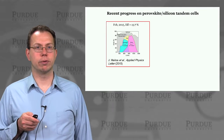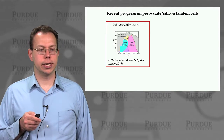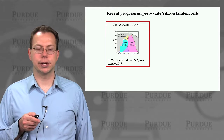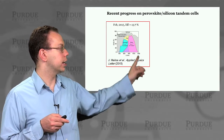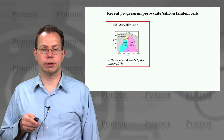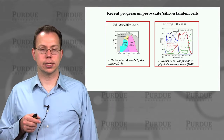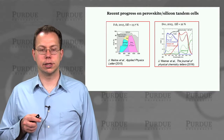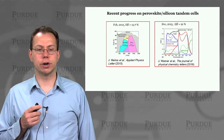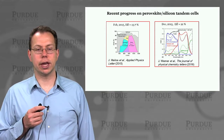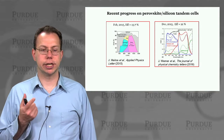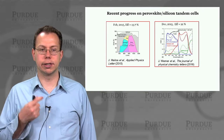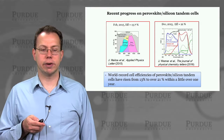There has been a lot of work just in the last year showing that you can have perovskite-silicon tandem cells. In early 2015 in Applied Physics Letters, it was shown you could get efficiency of about 13.7%. But less than a year later, just a few months ago as of the time of this recording, it was shown that you could get efficiencies close to 21% for this system by creating better current matching, stability, and better light trapping. So it's been a very rapid rise in progress.